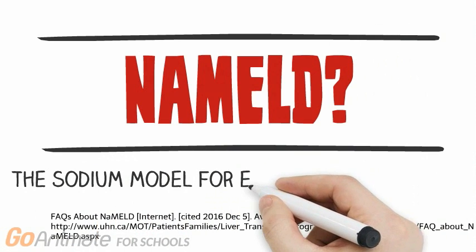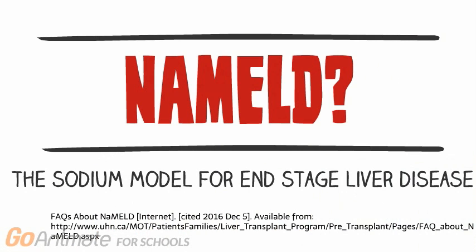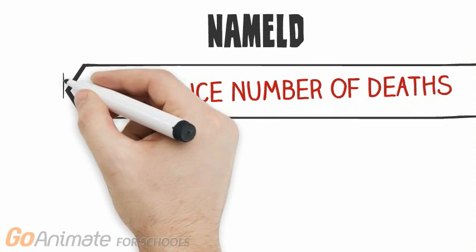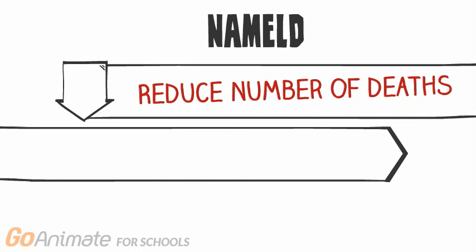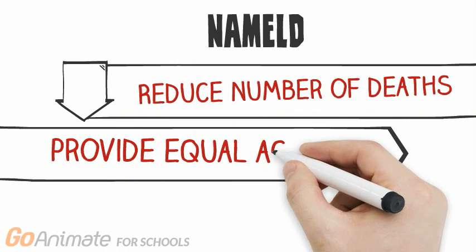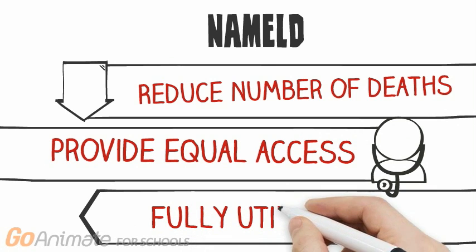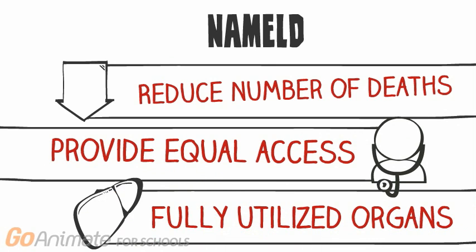NAMELD stands for the Sodium Model for End-Stage Liver Disease and it's a ranking system to determine which patient may get an available liver. The purpose of the NAMELD is to reduce the number of deaths while people are waiting for an organ, to provide equal access to liver transplants for everyone in Ontario, and to ensure that each donated organ is fully utilized.